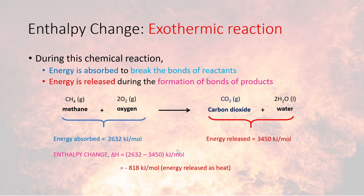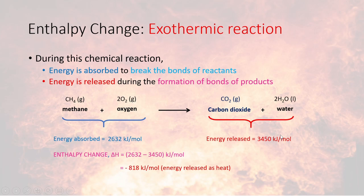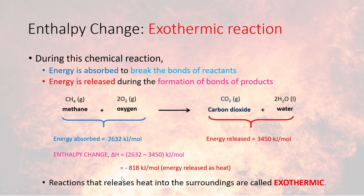But in what direction would the energy be transferred — out of the chemical system into the surroundings, or from the surroundings into the system? For this, we refer to the sign of the enthalpy change. It is negative, meaning that energy is transferred out of the chemical system into the surroundings. This makes intuitive sense: since more energy is released than absorbed, the excess energy not cancelled out by the energy absorbed is transferred into the surroundings. Reactions which release heat into the surroundings are called exothermic reactions.